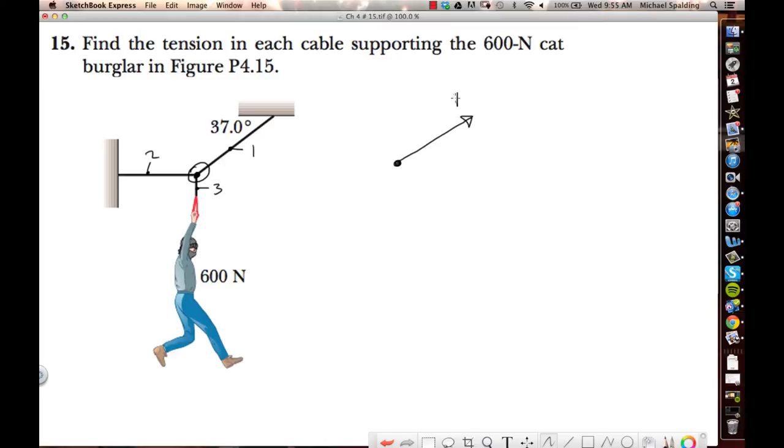So that free body diagram looks like this. We'll call this tension 1. Force in a rope is called tension. Tension 1. This will be tension 2, and then this is tension 3. And then show your angle, this is 37 degrees. That's step 1, free body diagram.